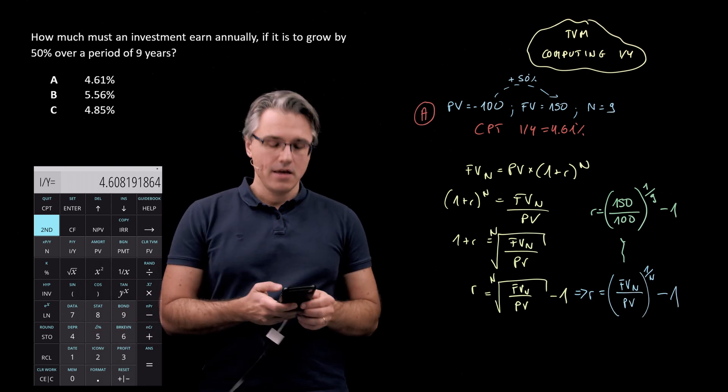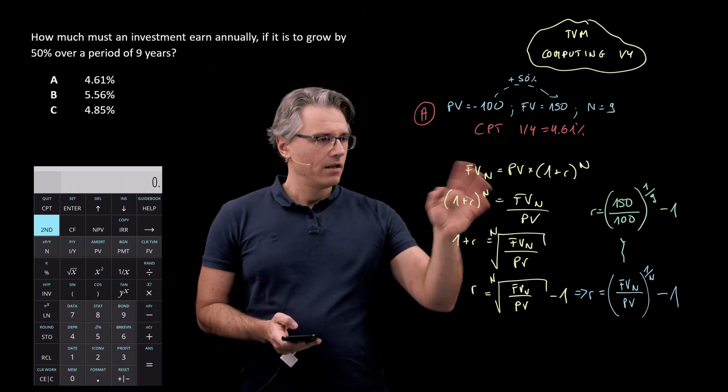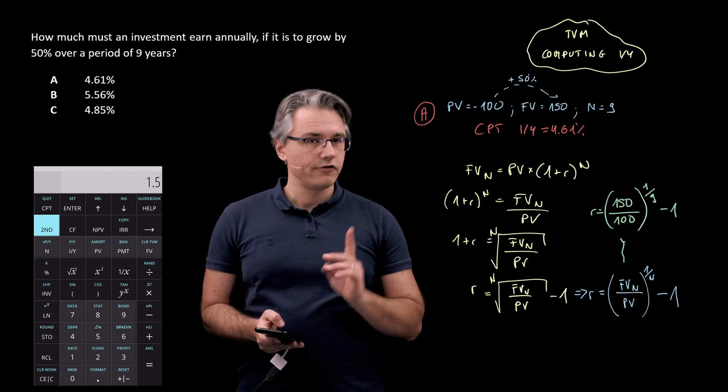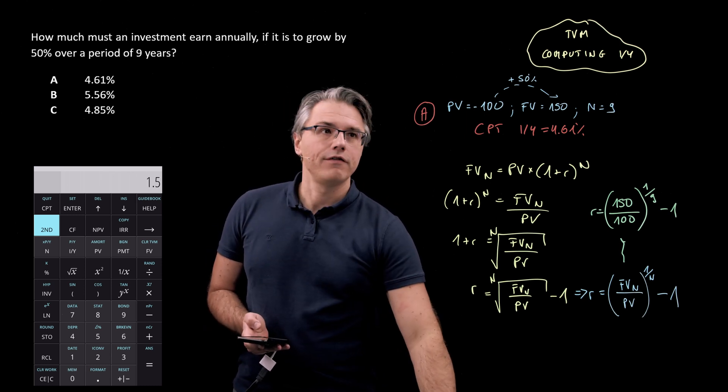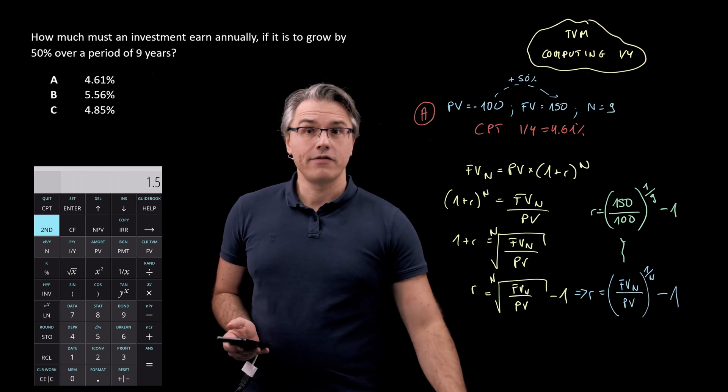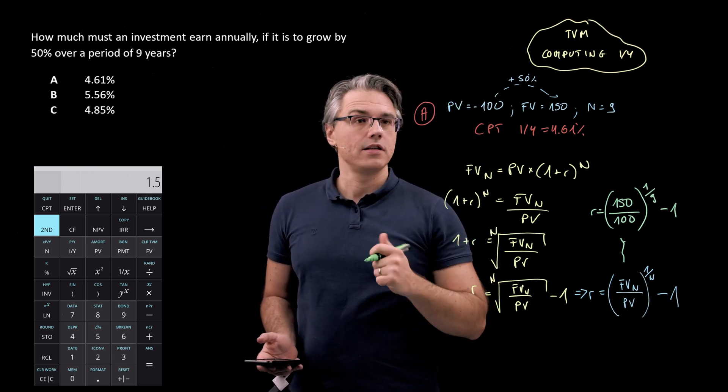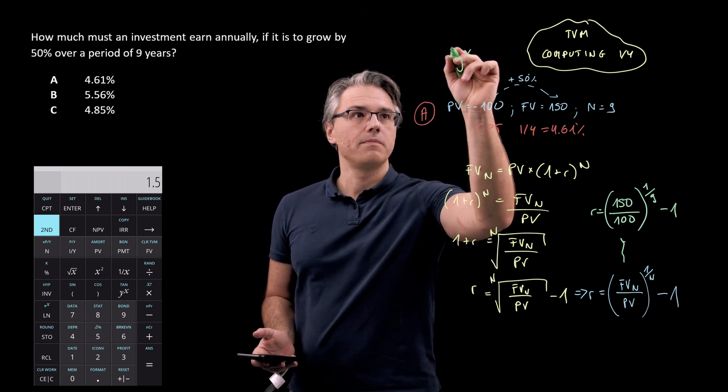So 150 over 100, that's obviously going to be 1.5. Now to raise to the relevant power, we're going to use that very useful key, which I've used a lot of the times before in the previous TVM questions, Y to the power of X.